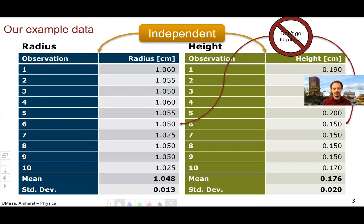For example, for observation number six, the radius is above the mean while the height is actually below the mean. This is what we mean when we say they're independent — just because the radius is high doesn't necessarily mean that the height or thickness is high.